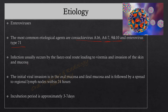The infection usually occurs by the feco-oral route, leading to viremia and invasion of the skin and mucosa. The initial viral invasion is in the oral mucosa and the ileal mucosa of the intestine, followed by spread to regional lymph nodes within 24 hours. The incubation period of this virus is usually three to seven days.